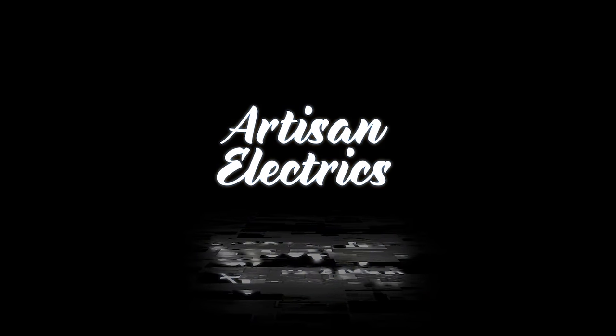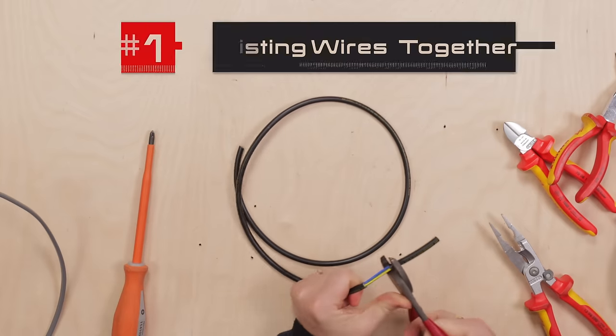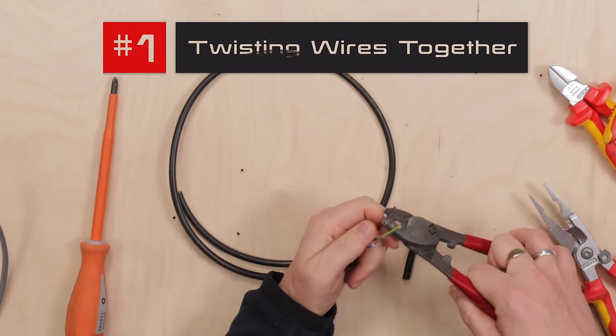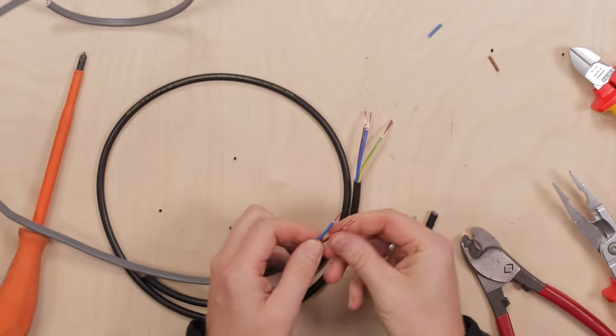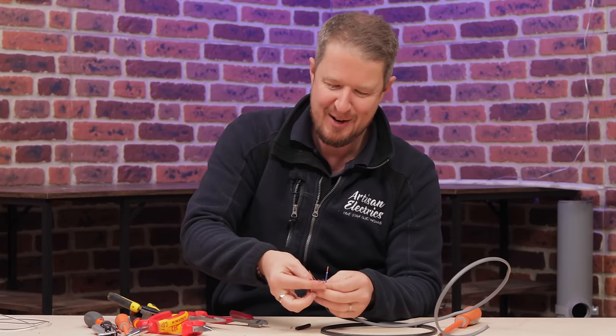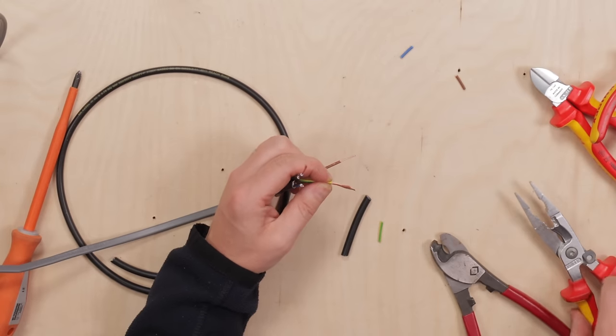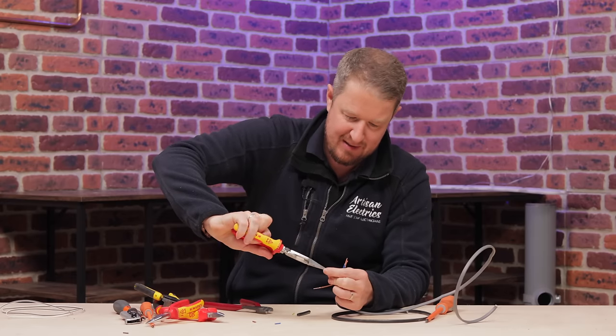The first DIY mistake that we see quite often as electricians is when people do this. They strip the wire back, take the ends off to expose the copper, all good so far, and they want to join two wires together. So what do they do? They get the wires and they do the old twisty twisty. Twisting the wires together. I've seen it with stranded conductors, I've seen it with copper solid conductors.